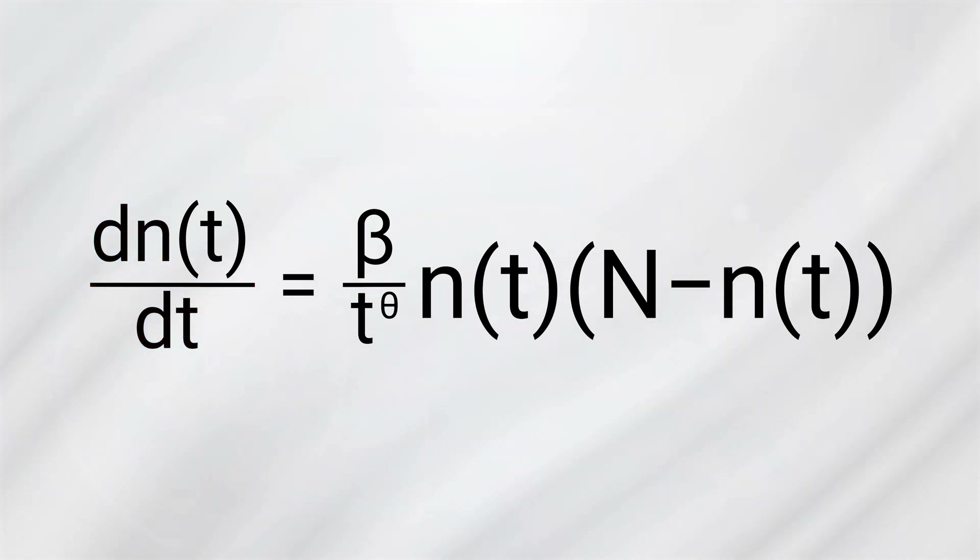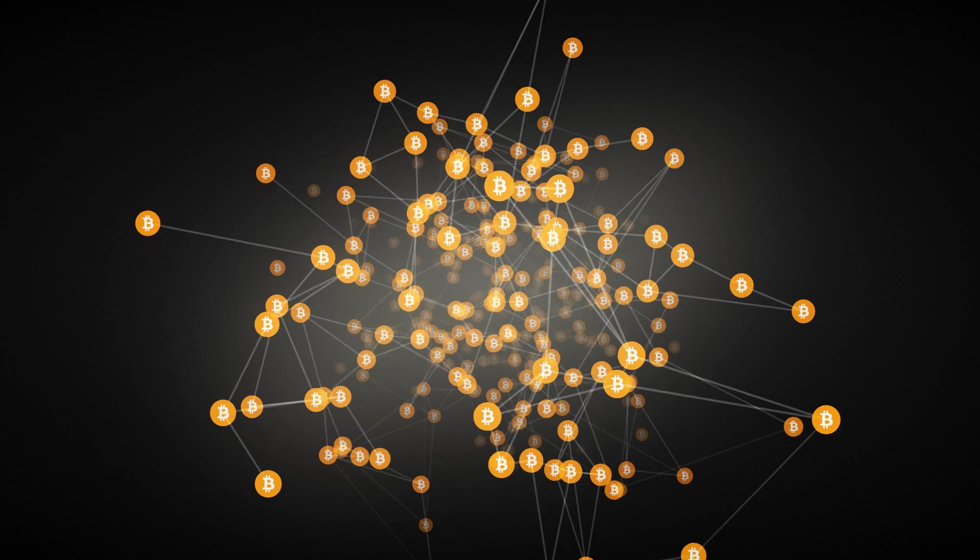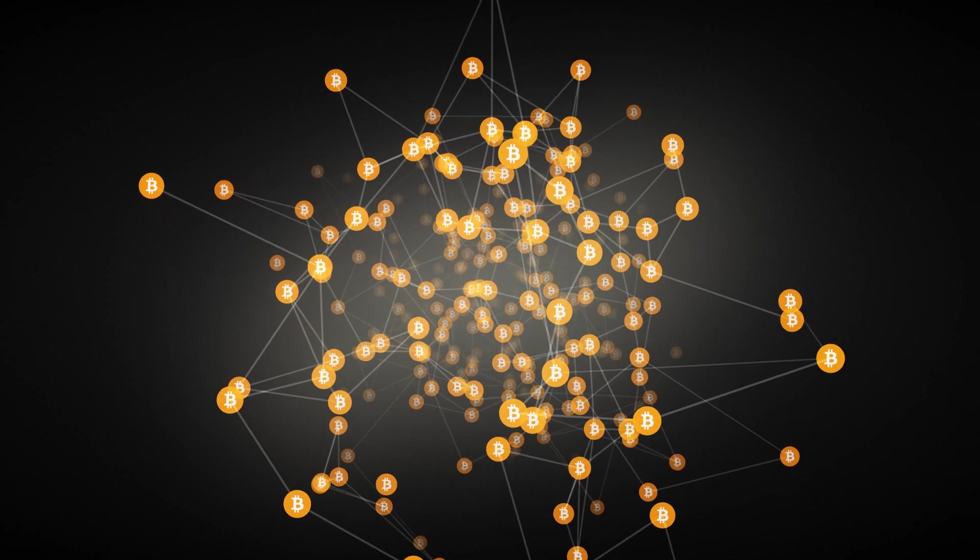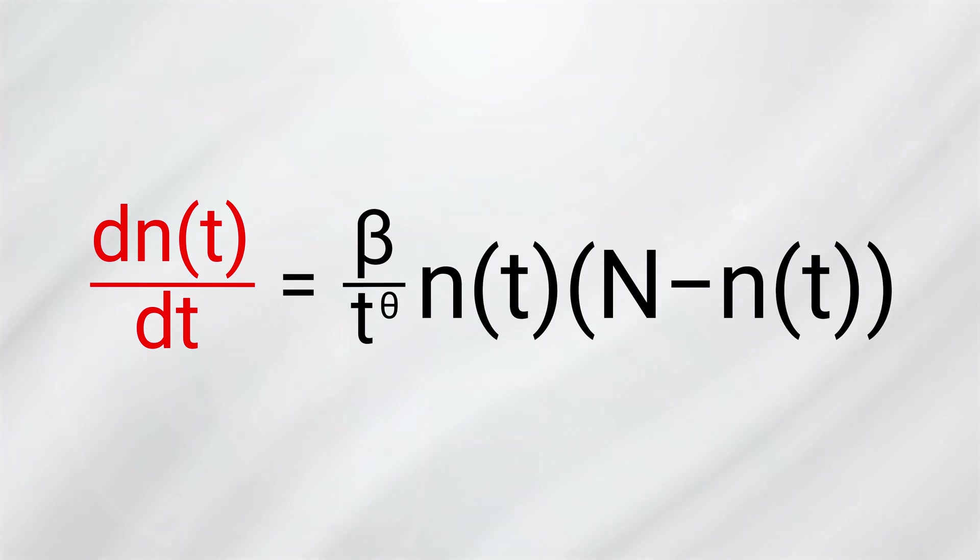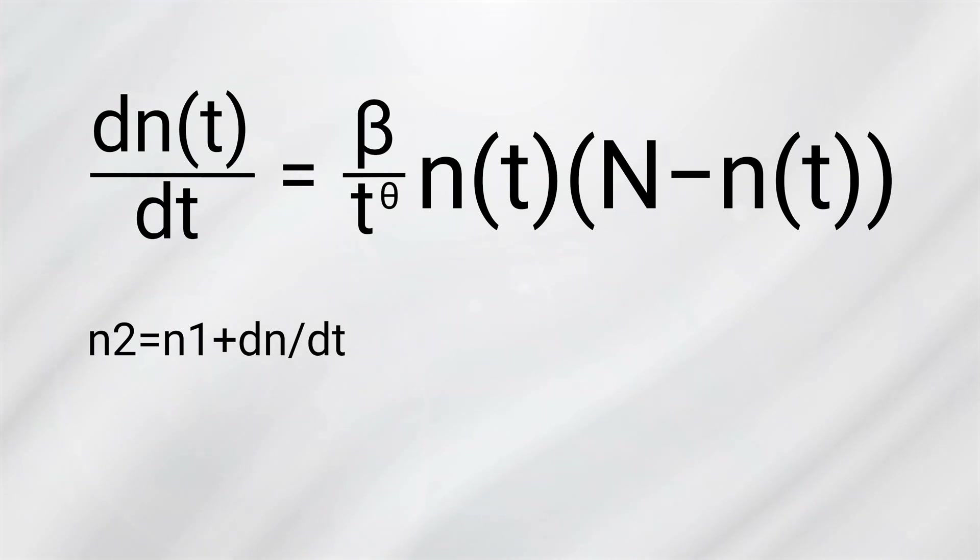In a nutshell, this equation explains how a network grows over time. The left side of the equation shows us how much the network state has changed, or how much it's grown since the last measurement. What's interesting here is that this change is directly proportional to the current state of the network, meaning that the growth depends on how big the network already is. We just take the previous value and add the change to get the new value. Think of this as an iterative process. Each step builds on the previous one, and the network keeps growing in relation to where it is at any given time.